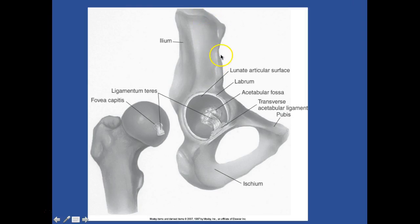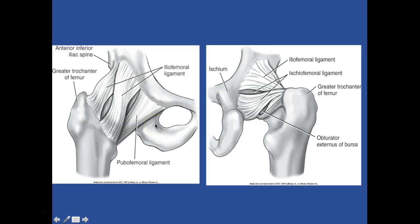I want you to know your labrum that surrounds the joint, keeps the ball in place. You have your pubis, your ischium, your ligamentum teres, and your fovea capitis. This is how your hip is held together. There are the ligaments there - I'm not going to make you label them.